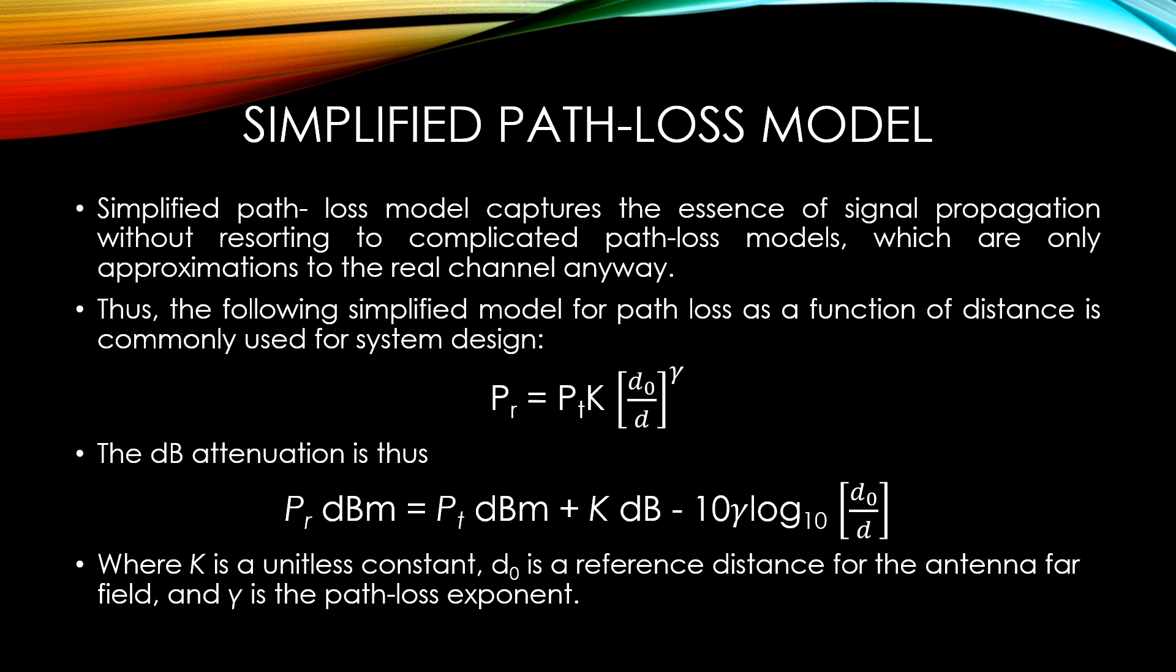Thus, the following simplified model for path loss as a function of distance is given by PR equal to PT K (d0 upon d)^γ. The dB attenuation is thus PR dBm equal to PT dBm plus K dB minus 10γ log 10 (d upon d0), where K is a unitless constant that depends on antenna characteristics and the average channel attenuation, d0 is the reference distance for the antenna far field, and γ is the path loss exponent. The values of K, d0, and γ can be obtained to approximate either an analytical or empirical model.